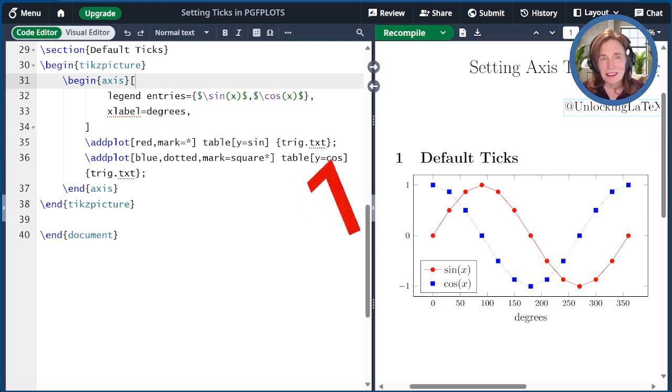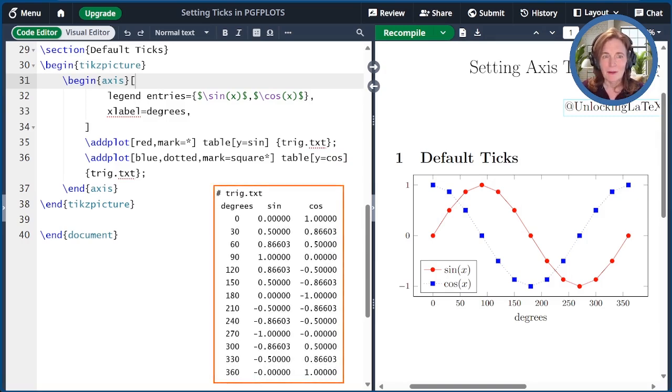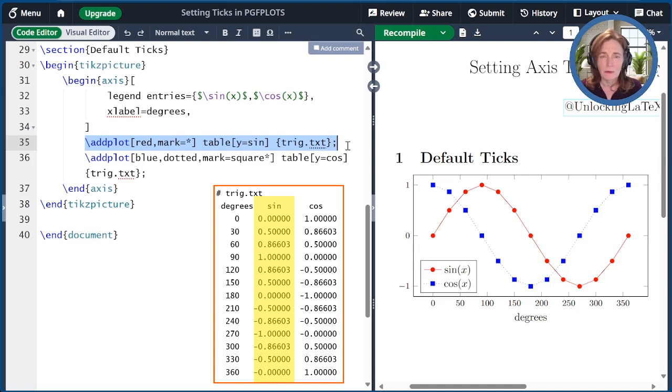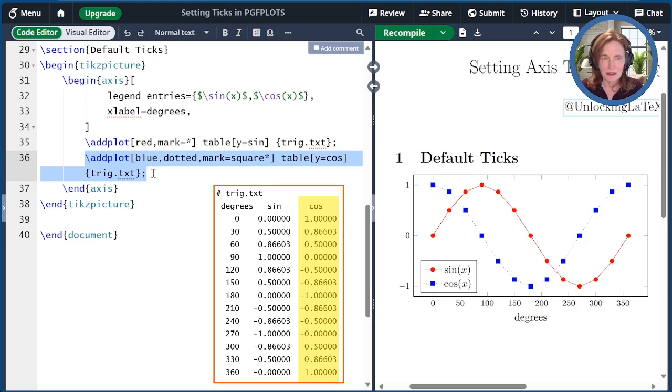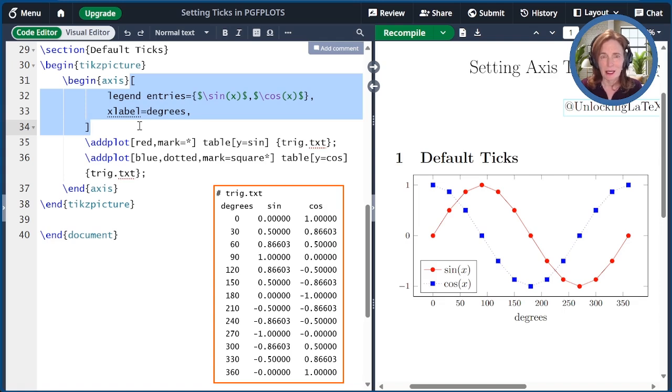The first way to set ticks is to let PGF plots pick them for you. In my first picture, I'm plotting data from the file trig.text, which I show below. By default, addplot selects the first column of the data table, which in this case is degrees, to be the x values. Now the first addplot command here uses the sine column to be the y values, and the second addplot command uses the cosine column to be the y values.